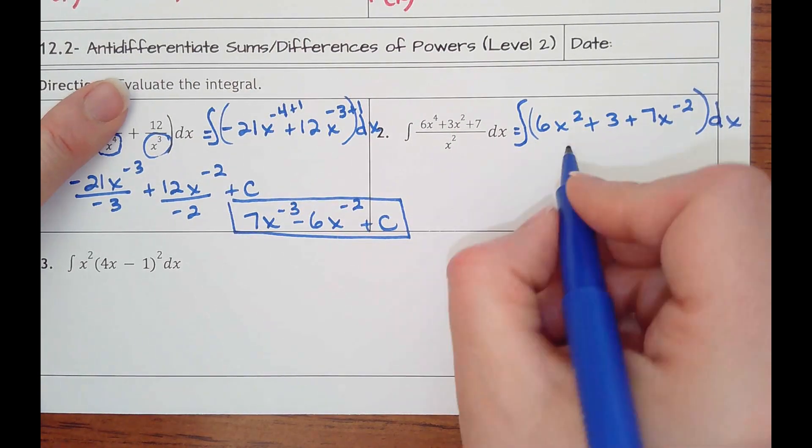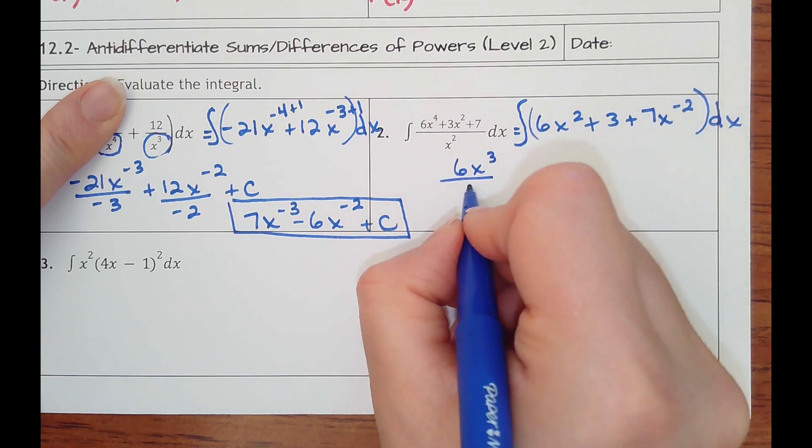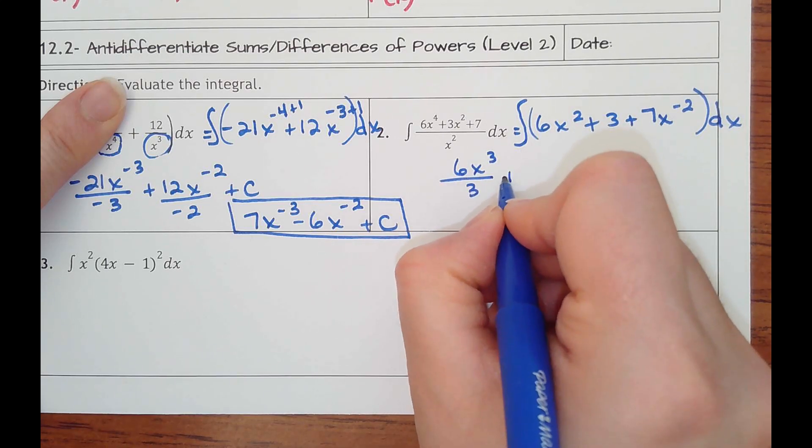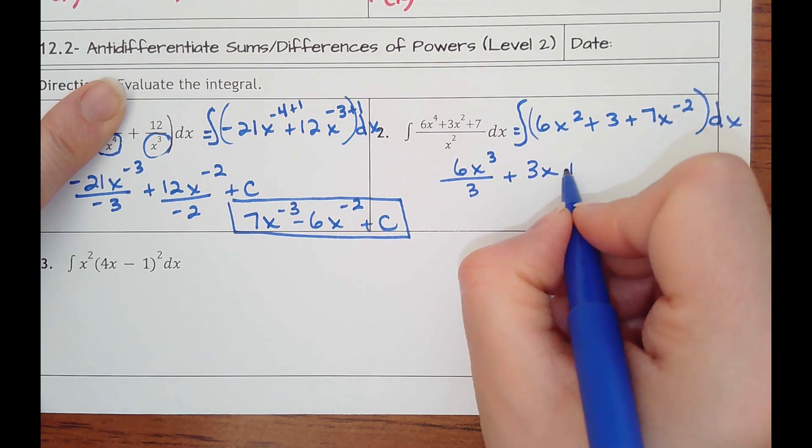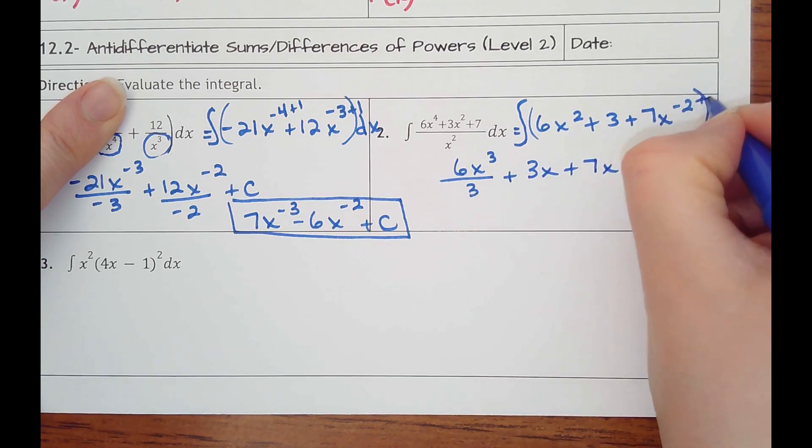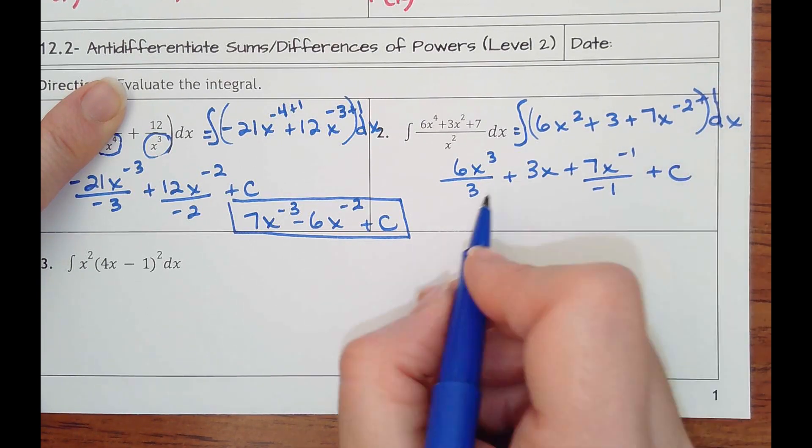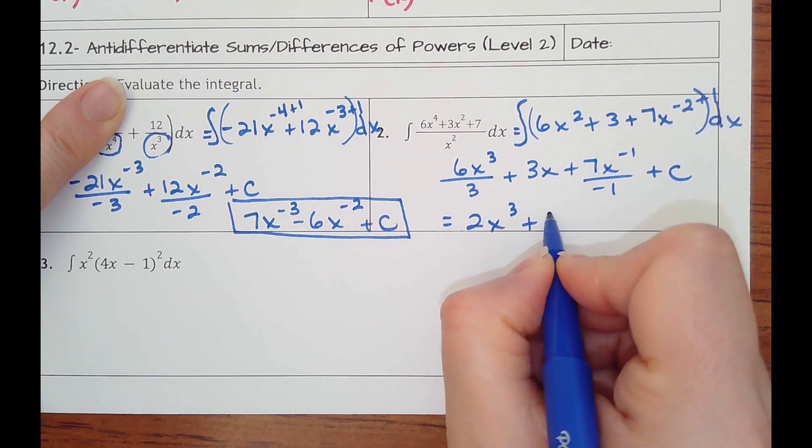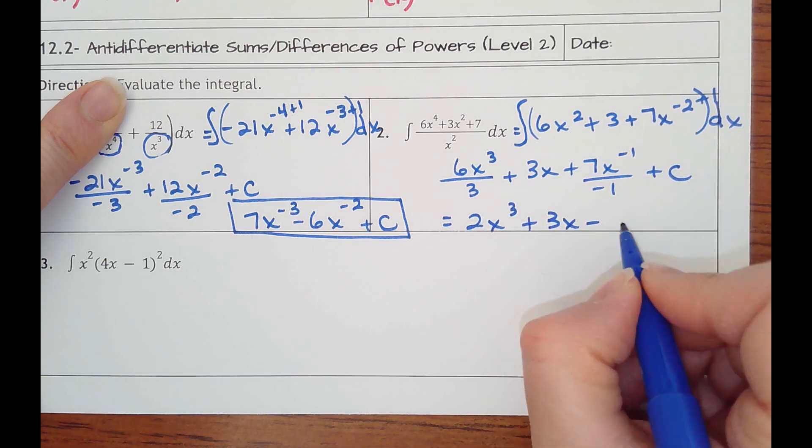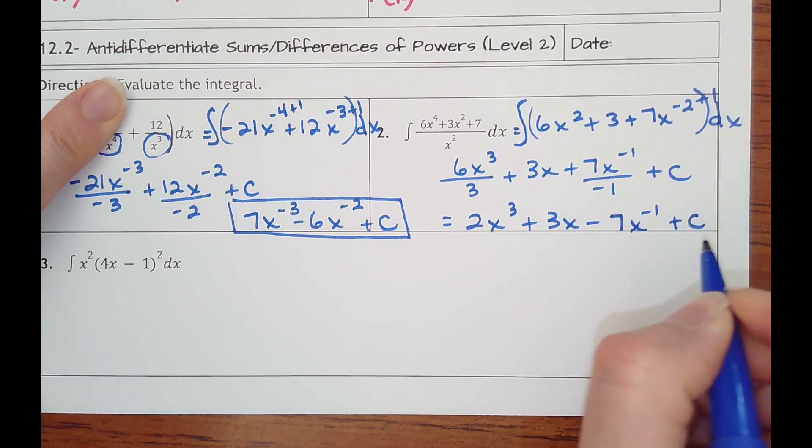And so I'd add 1 to the power. So it would be 6x cubed, divided by 3, plus, here we have a constant. We just need to add an x to that, plus 7x. Add 1 to the power. That would be negative 1, divided by negative 1, plus c. That would equal 2x cubed, plus 3x, minus 7x to the negative 1st power, plus c.